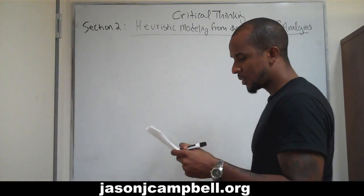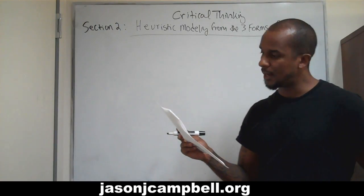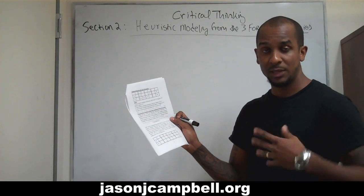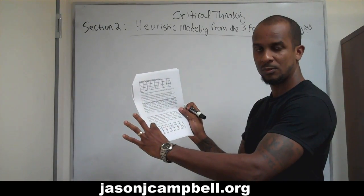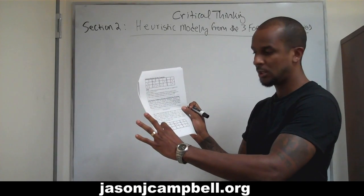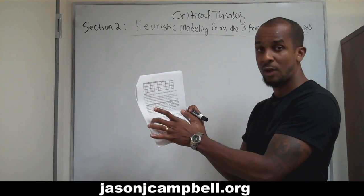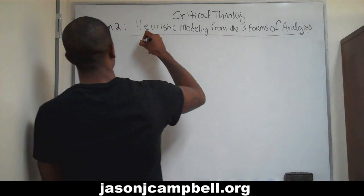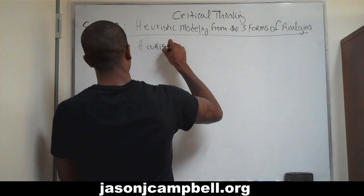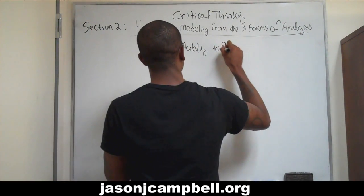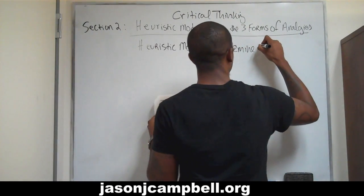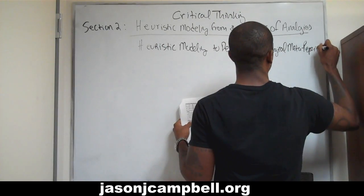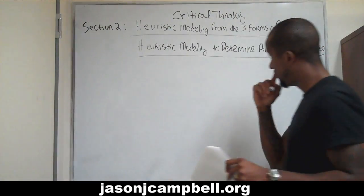We're going to use heuristic modeling to determine analogical meta-property relations. The game I designed is a heuristic model — an explanatory model. Here's the explanation and here's the incorporation of the explanation into the model. Obviously it works both ways: I could be given the model and then describe it, or I could have the description and apply it to the model. So this is heuristic modeling to determine analogical meta-properties — very, very complex stuff.